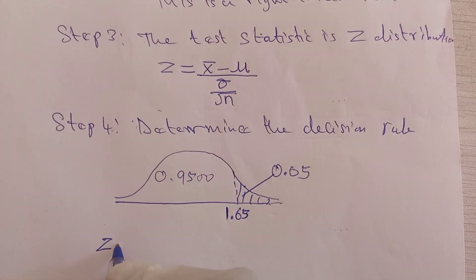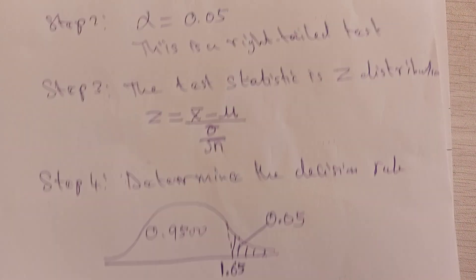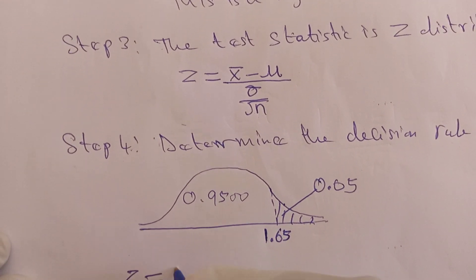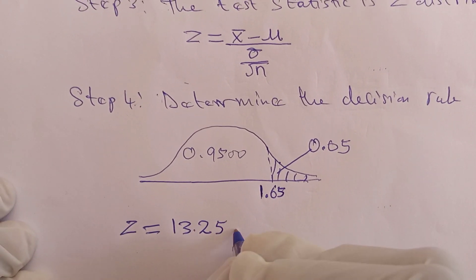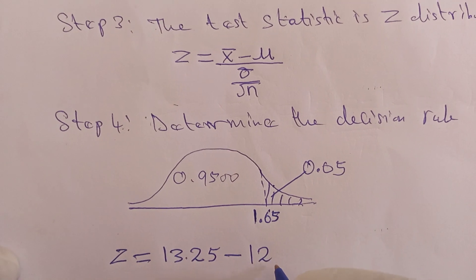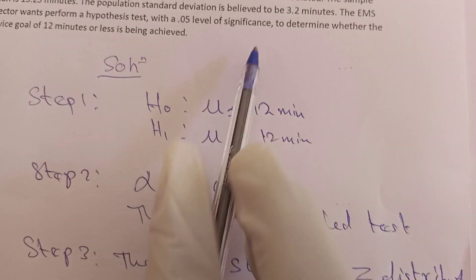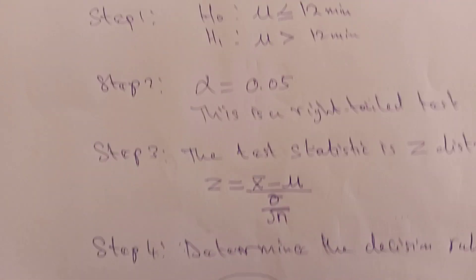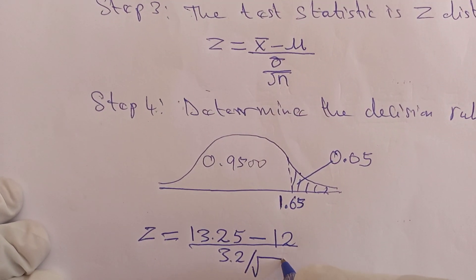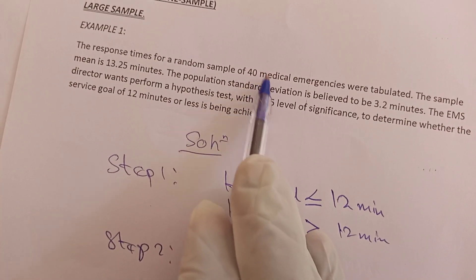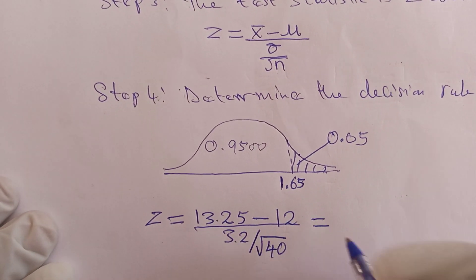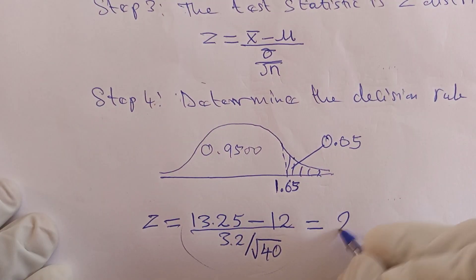After getting the Z critical value, you find the computed Z. According to the question, our sample mean was 13.25. We substitute: 13.25 minus the population mean, which is 12, divided by the standard deviation, 3.2, divided by the square root of n. Our n is the sample size, which was 40. When you enter this on your calculator, you get 2.47.